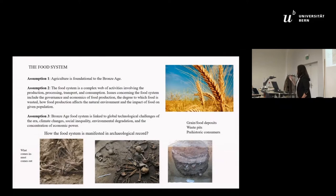I would like to imagine the Bronze Age in a slightly different way, where the metals, the bronze, matter less than before. I would like you to imagine something which I call the food system of the Bronze Age. I'm making three basic assumptions. My first assumption is that agriculture is fundamental to the Bronze Age. My second assumption is that the food system is a complex web of activities involving production, processing, transport and consumption. Issues include the governance and economics of food production, the degree to which food is wasted, how food production affects the natural environment, and the overall cultural impact upon society.